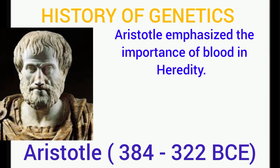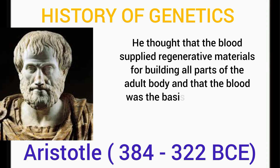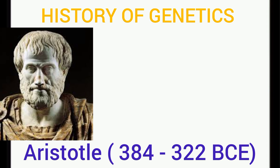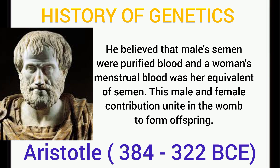Another person we have to look at is Aristotle. He emphasized the importance of blood in heredity. He thought that the blood supplied regenerative materials for building all parts of the adult body, and that blood was the basis for passing on these generative powers to the next generation. He said that men's semen was the purified blood, and that a woman's menstrual blood was the equivalent of the semen. When the men's semen and the female menstrual blood come together, they can develop an offspring.